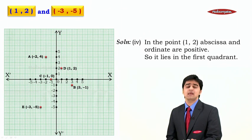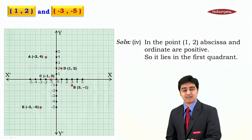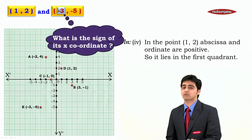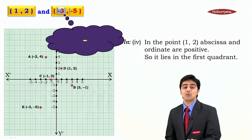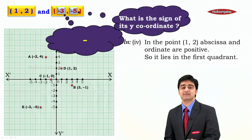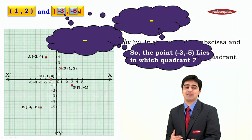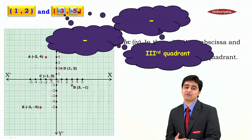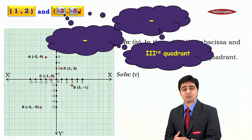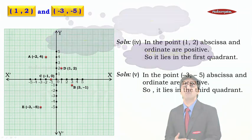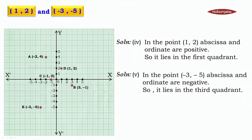The next point has got its coordinates to be minus 3 comma minus 5. The sign of its x coordinate is minus, and the sign of its y coordinate is again minus. So the point minus 3 comma minus 5 lies in the third quadrant. The abscissa is negative as well as the ordinate is also negative, so it lies in the third quadrant.